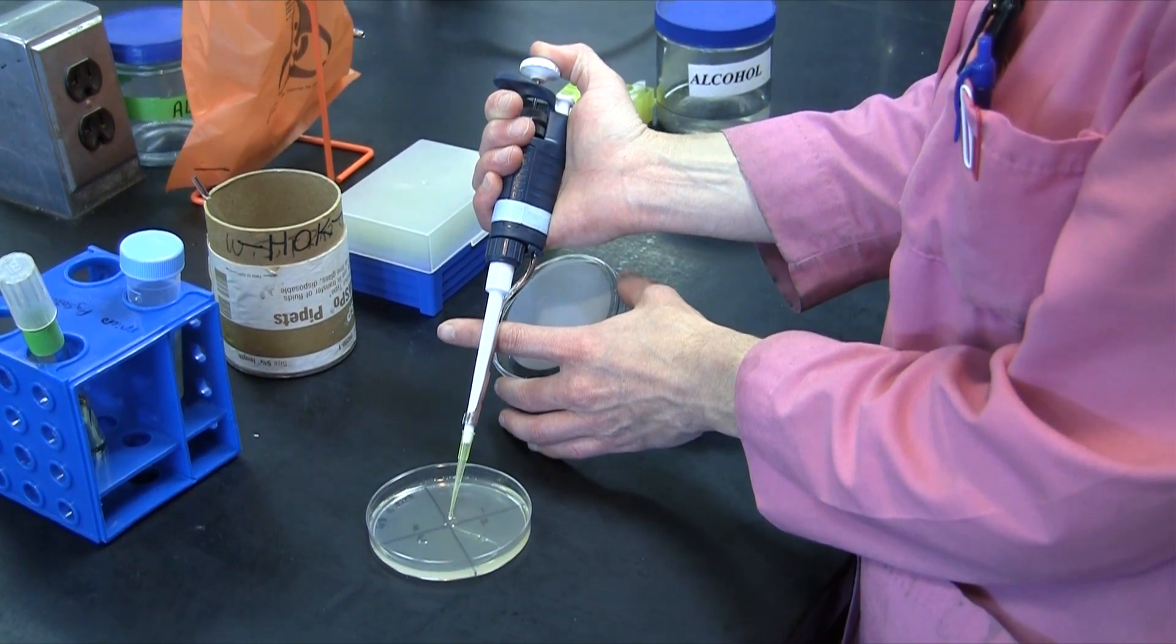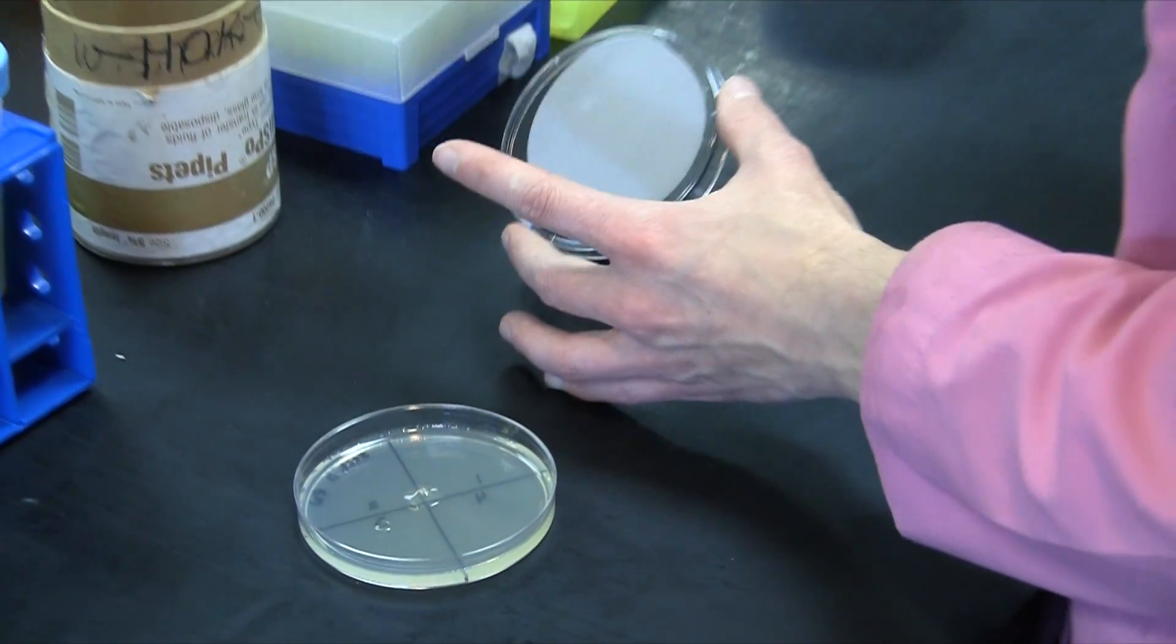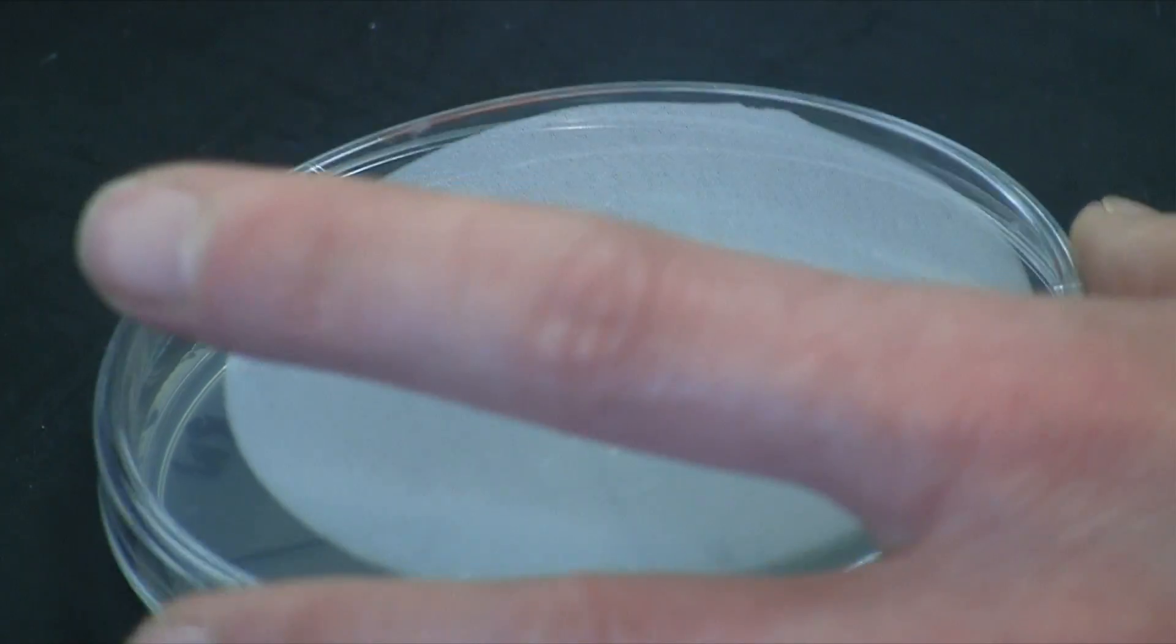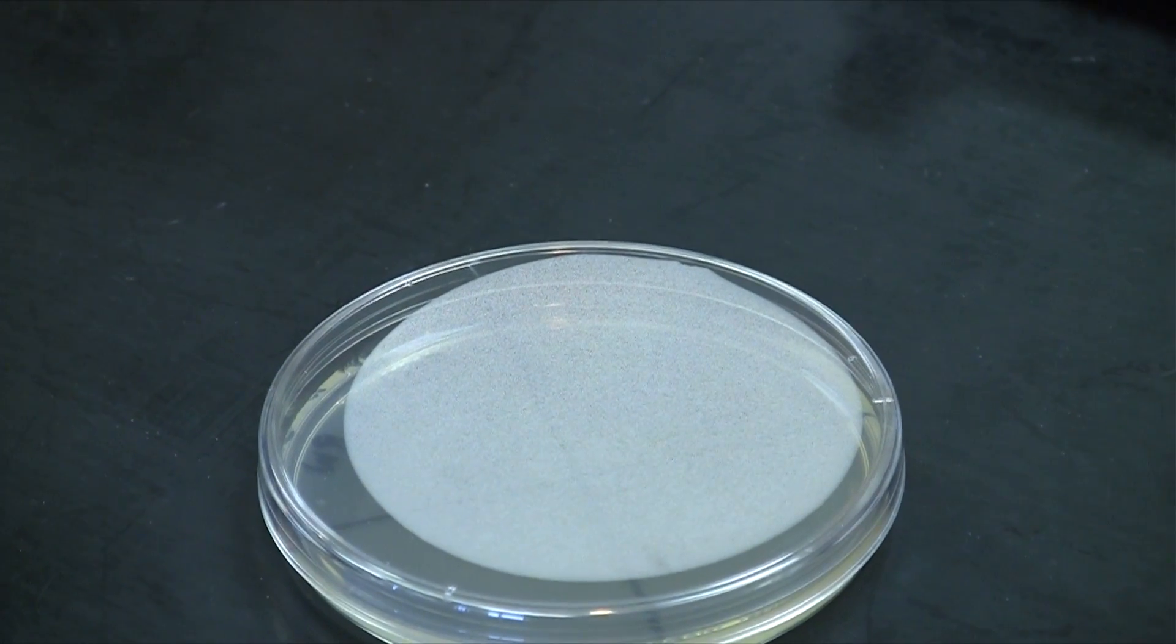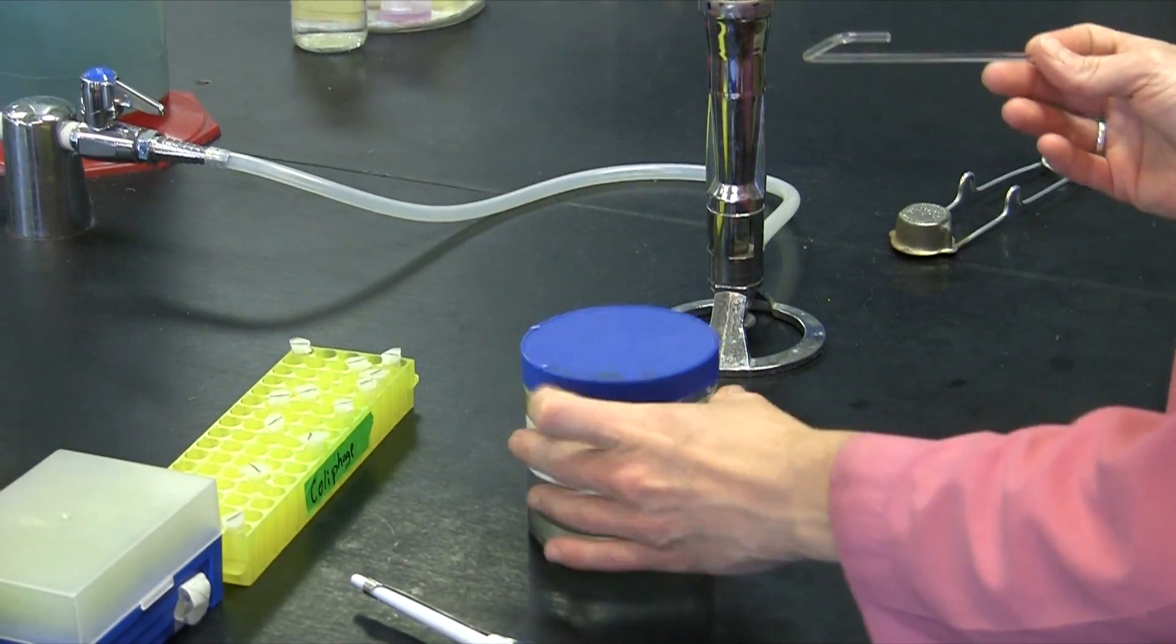Go ahead and spot your bacteria onto the center of the plate, because we're going to be using the spread bar to disperse them throughout the entire plate. You will have already labeled your plate with four quadrants. Three of these quadrants are going to be spotted with bacteriophage, and one of them will be our control.